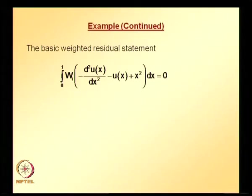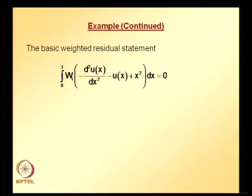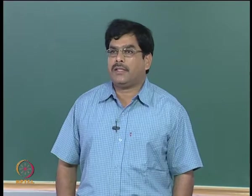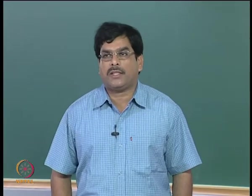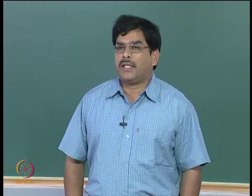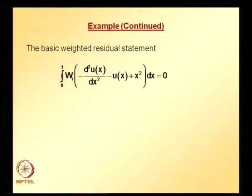The basic weighted residual statement for any weighted residual method is: multiply the differential equation with a weight function and integrate over the problem domain, equating to zero. The weight function depends on the chosen method. For least square weighted residual, it is the partial derivative of the residual with respect to unknown coefficients; for collocation, it is the Dirac delta function; and for Galerkin method, it is the partial derivative of the trial solution with respect to unknown coefficients.